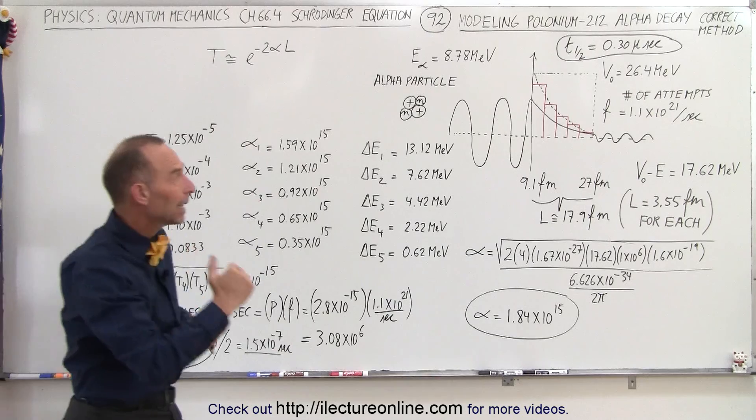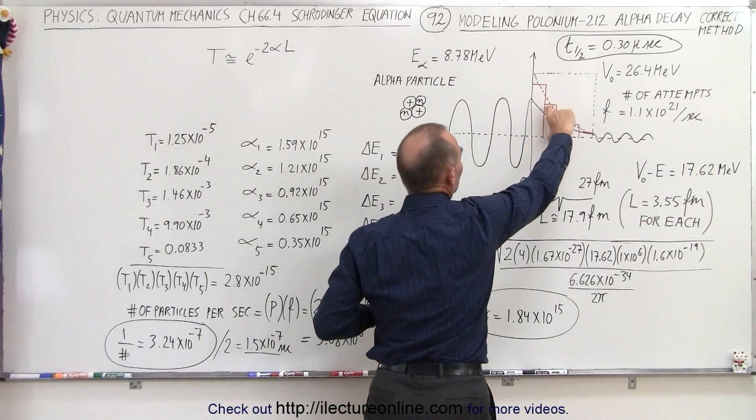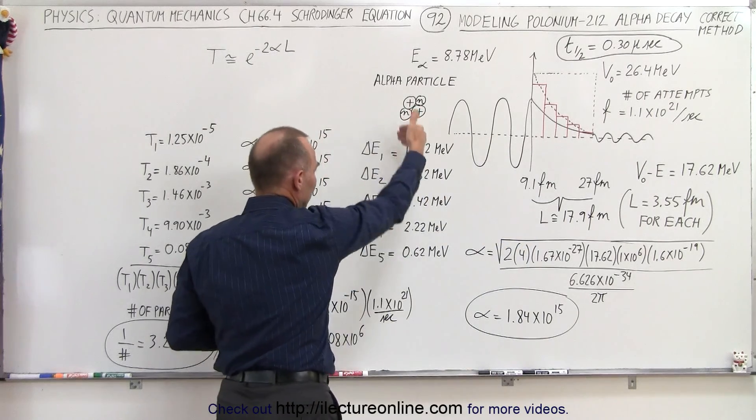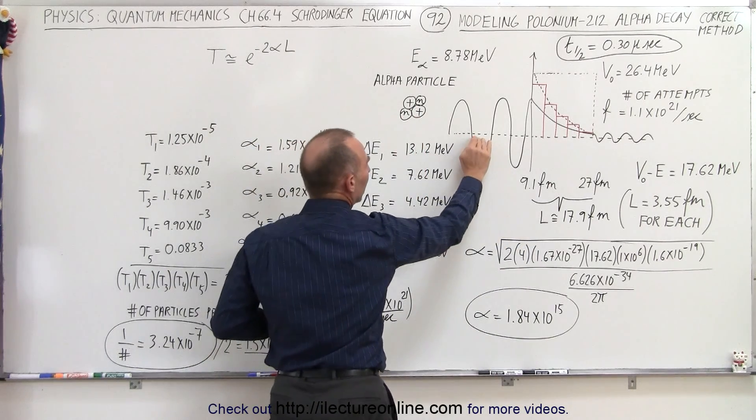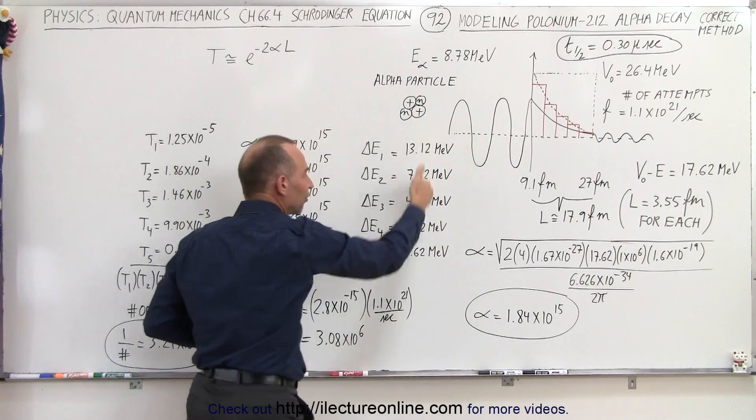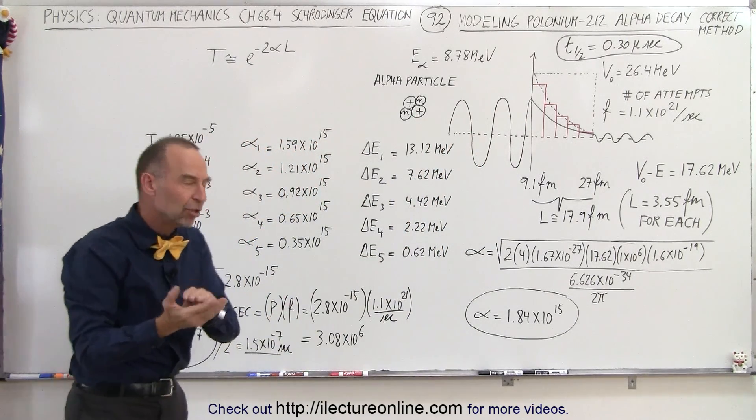Then if we calculate the average height in the potential, the average potential for each section of the barrier, we then have the difference between the energy of the particle and the energy of the barrier, and we have that labeled here for the five sections. So those are the energy differences.